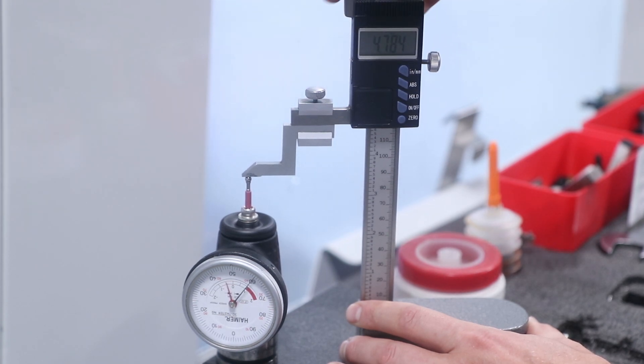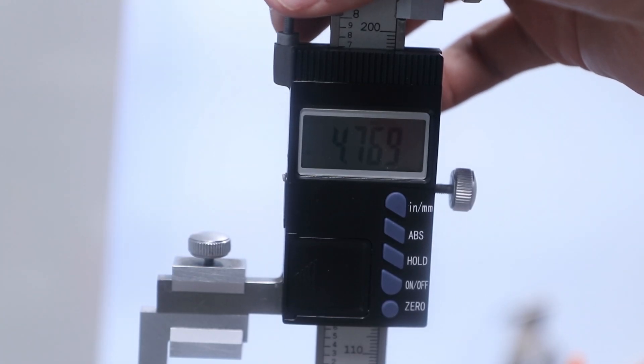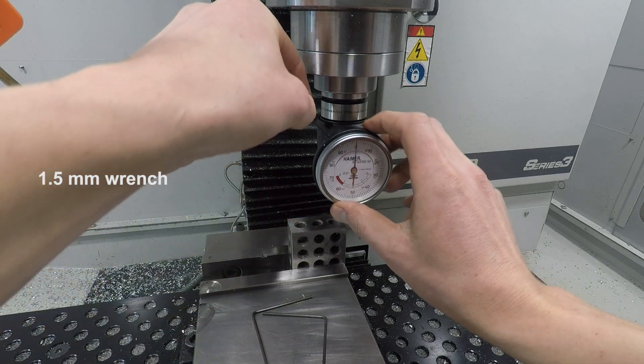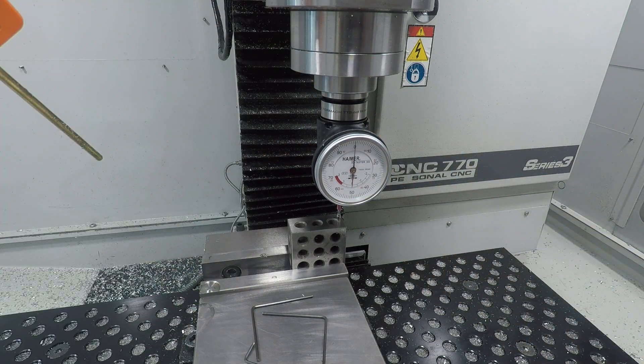The next thing that we need to do is recalibrate the Haimer's zero. Every Haimer that we've owned has had a compressed gauge length of 4.768. So using our height gauge, we'll compress the Haimer tip to 4.768 and then use the four screws along the periphery of the dial indicator face to ensure that when you're at that height, the Haimer reads zero.